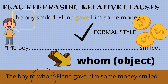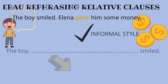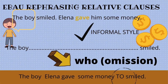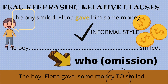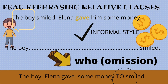The second, more informal option typical of spoken language involves omitting the pronoun — since it functions as the complement of the clause and is followed by a subject — and placing the preposition at the end, attached to the verb: 'The boy Elena gave some money to, smiled.'